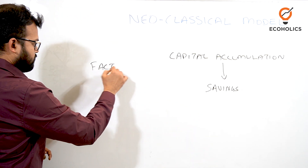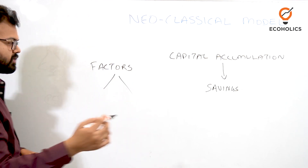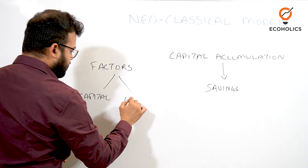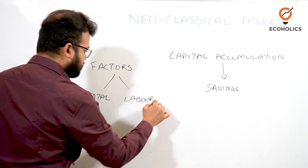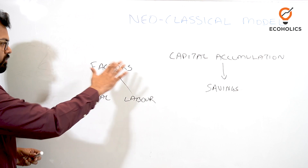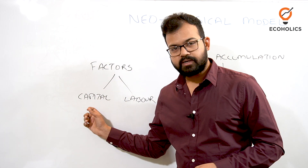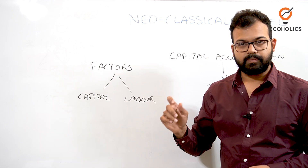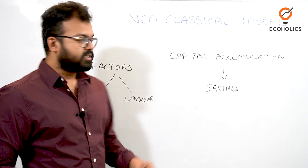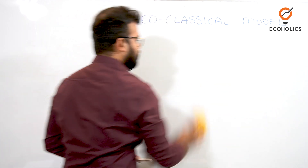The next important aspect of this model is the factors of production. In the Solow neoclassical model, two factors of production are considered: first, capital, and second, labor. Additionally, in the neoclassical Solow model, they have augmented technology as well.